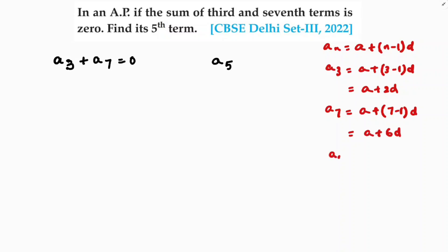And I need to find a5. So a5 will be a plus 5 minus 1 into d. So a plus 4d.